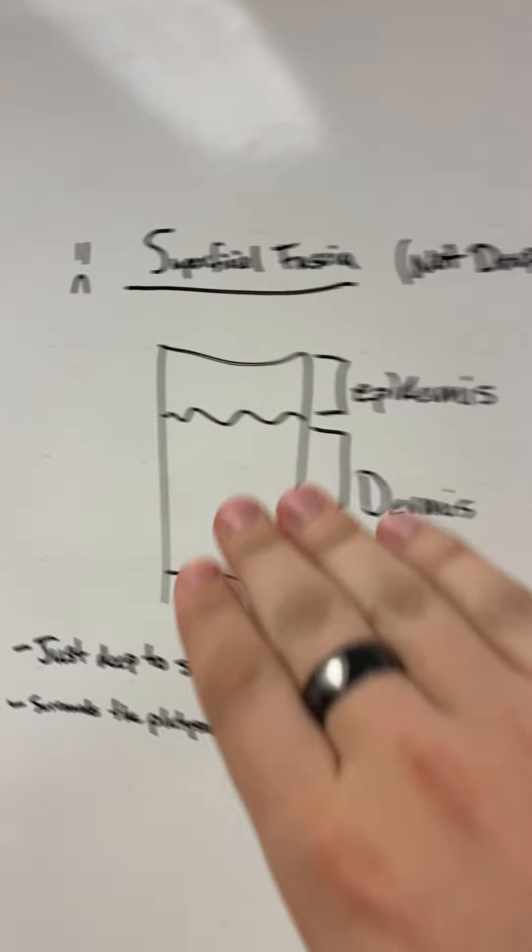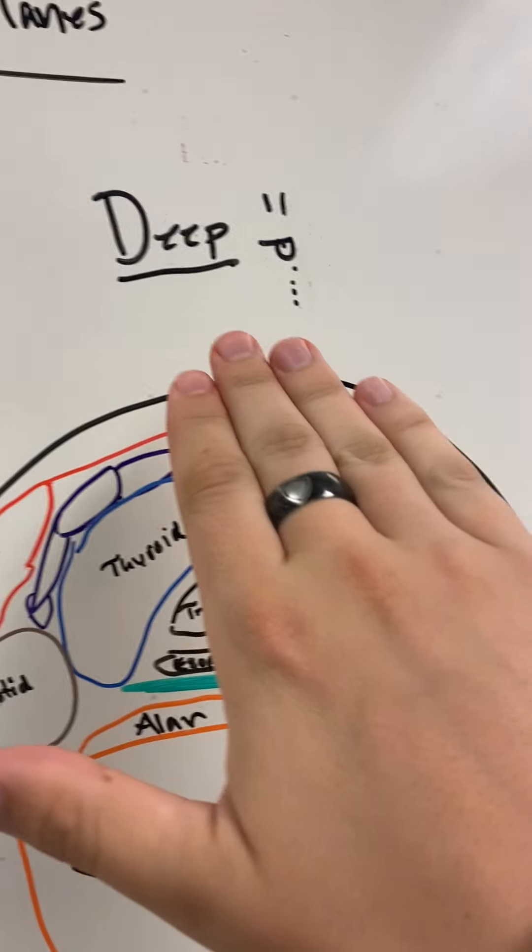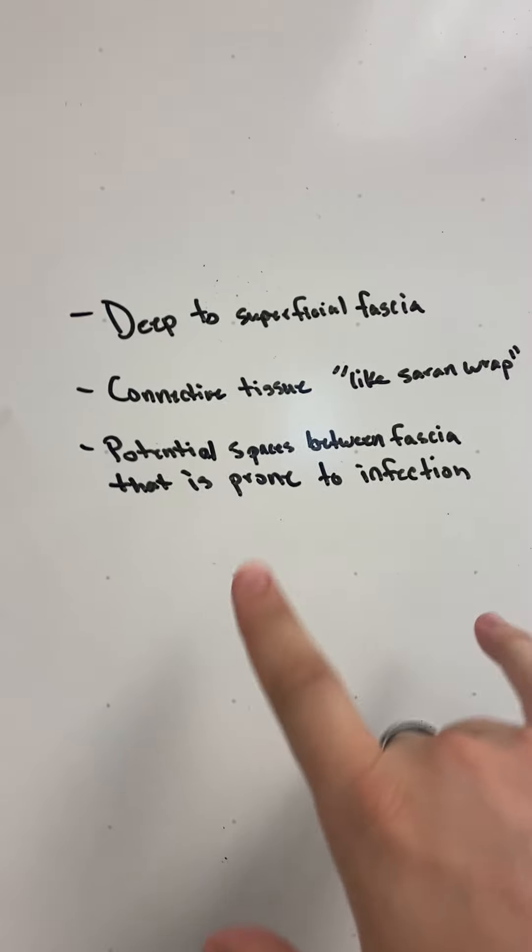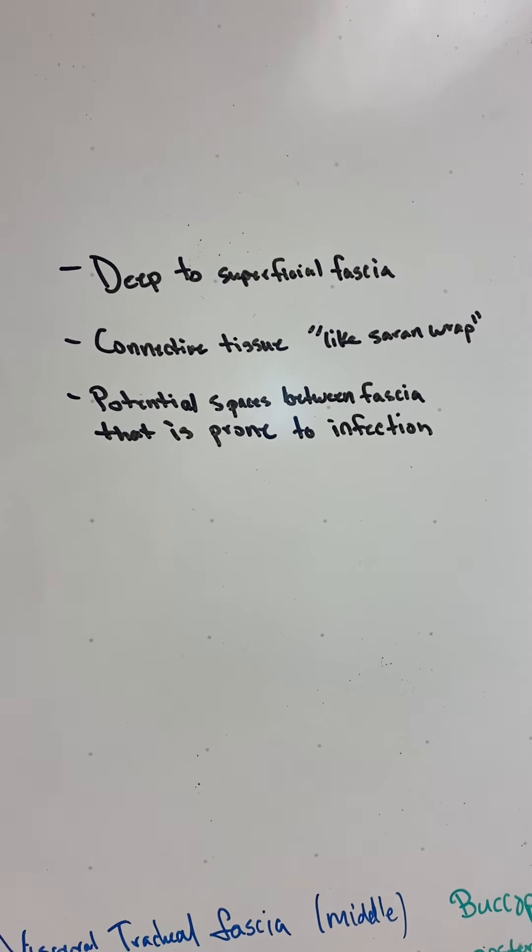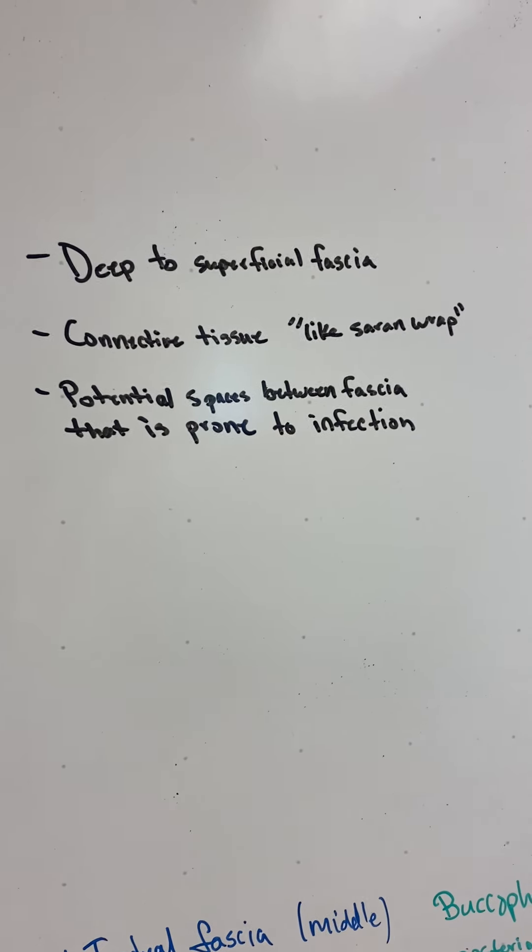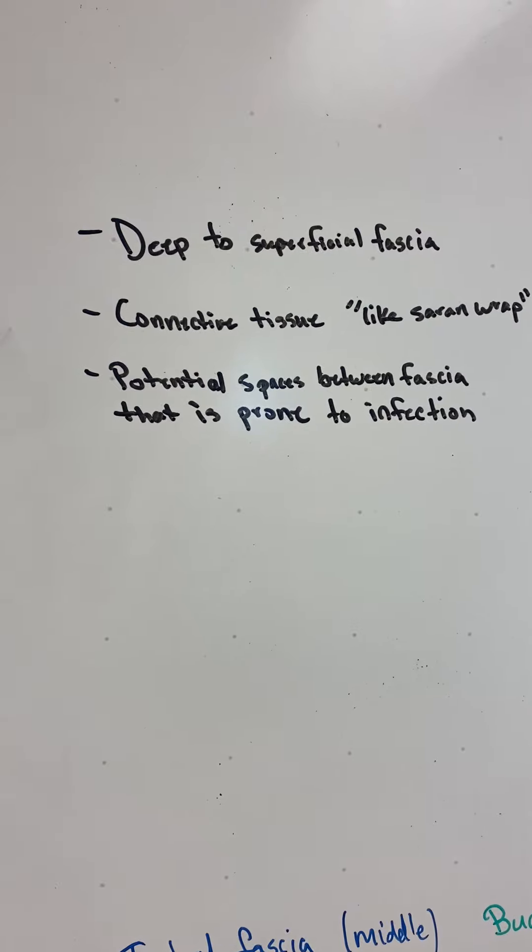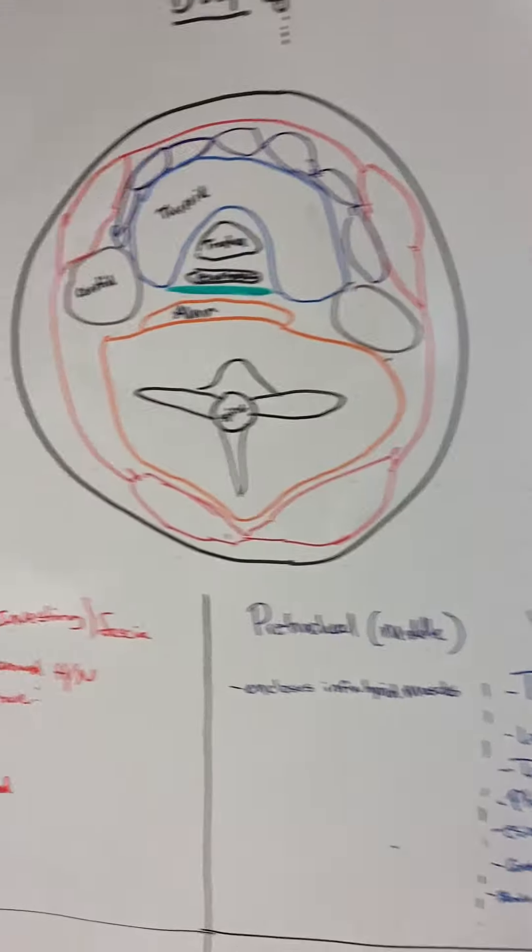So my little joke is we don't want it shallow, it's a sad face, we like it deep. So there's some notes: it's deep to the superficial fascia, it's connected tissue, so it's just like saran wrap. And potential spaces between fascia are prone to infection. So these spaces can be created and that's where infection might leak.